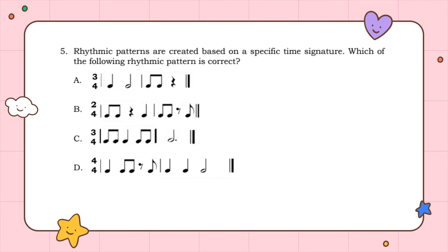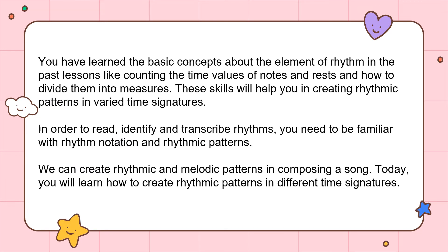Number 5: rhythmic patterns are created based on a specific time signature. Which of the following rhythmic patterns is correct? Examine the choices carefully. If you answered letter C, you got it right.